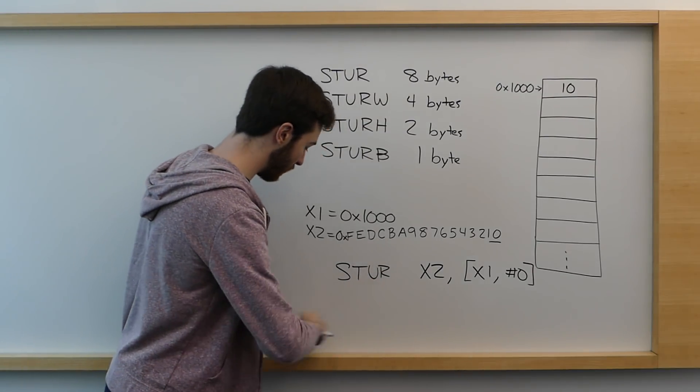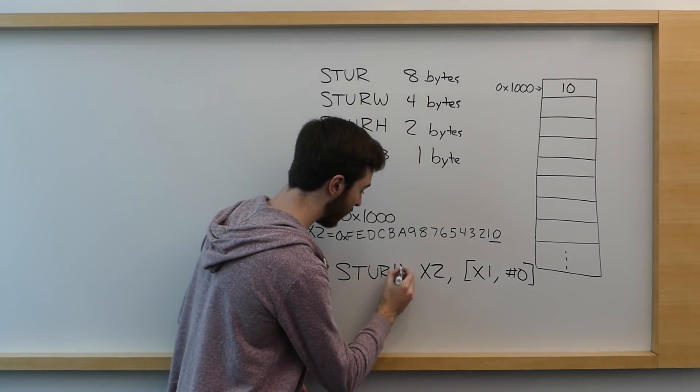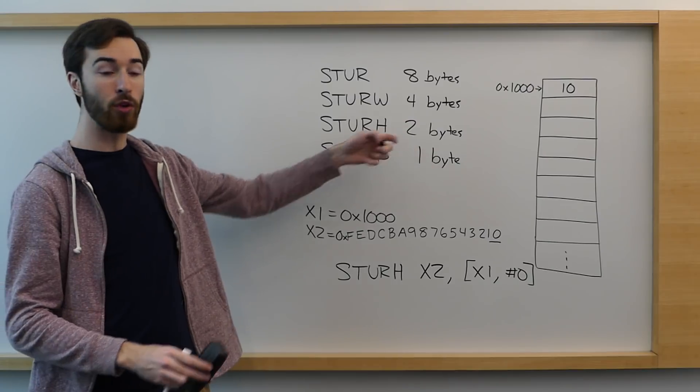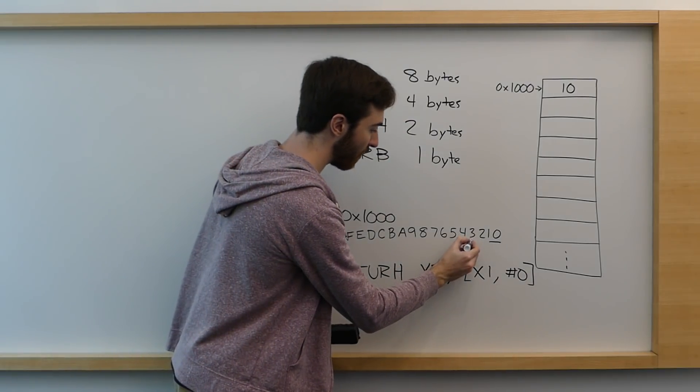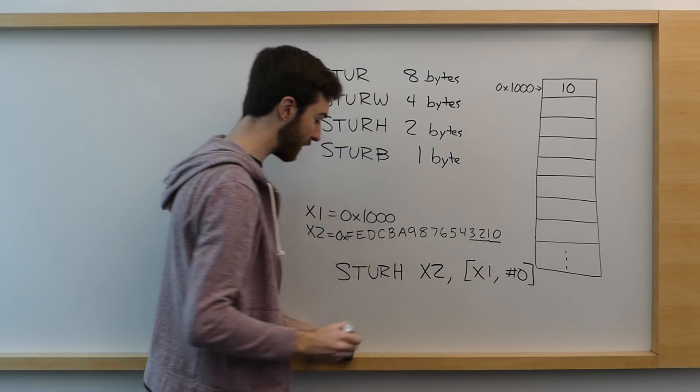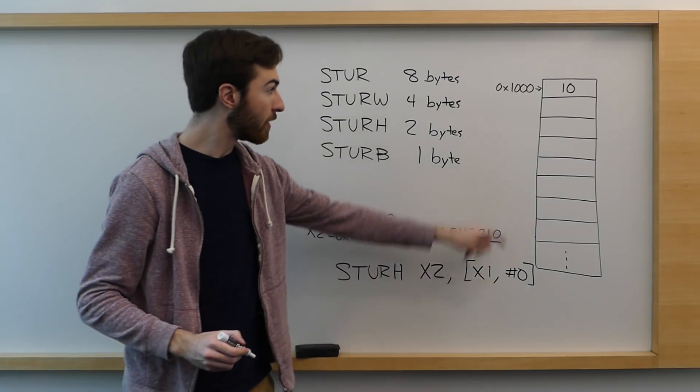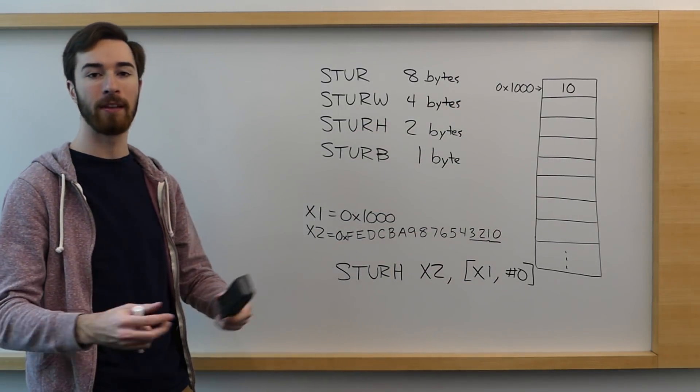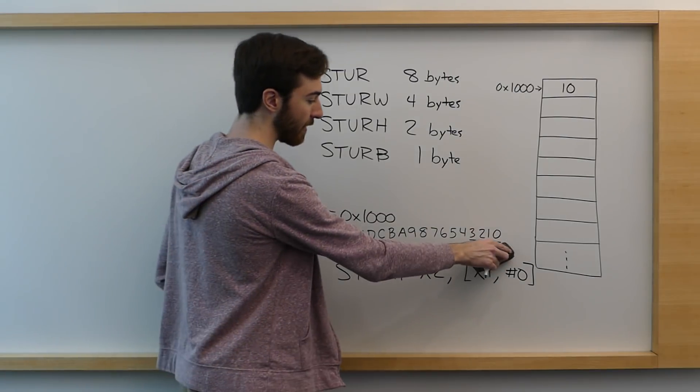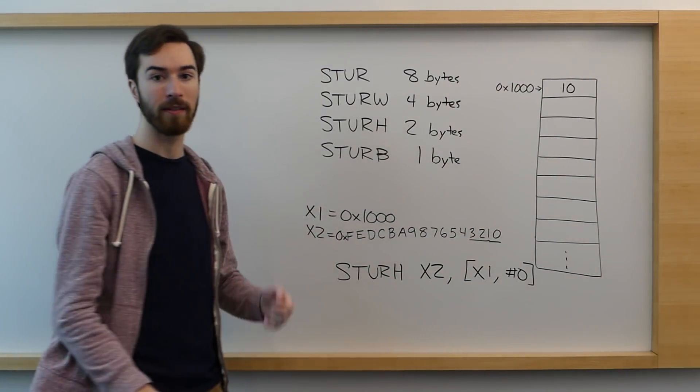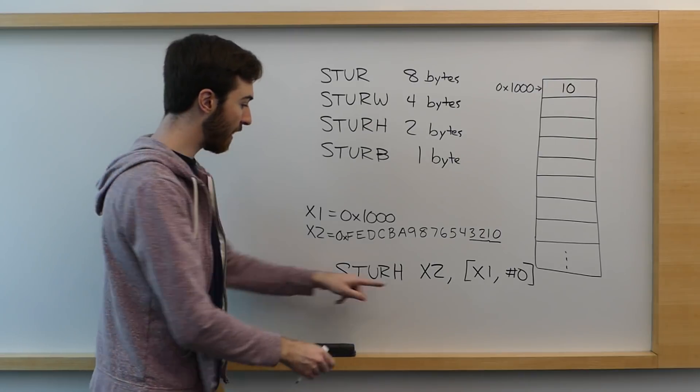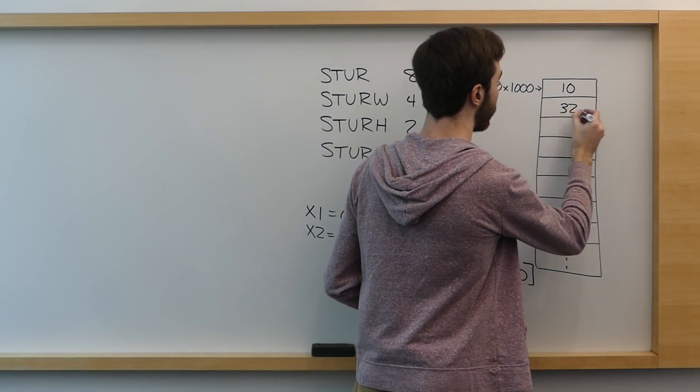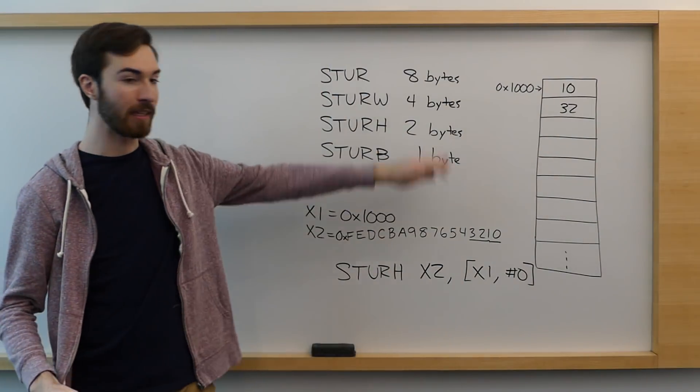So in this case we're only storing a byte of memory and our store command will take the least significant byte of our number and only store that to address 1000 in memory. So after we execute this command, if we had our memory over there, it would only have one zero there and everything else would be left as it was before. If we change this to a STURH command, now we're going to be storing two bytes of this number to memory.